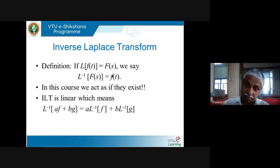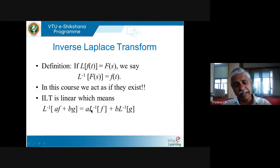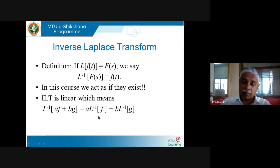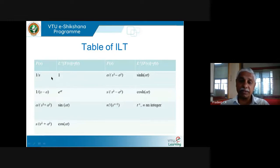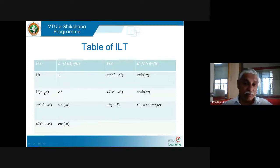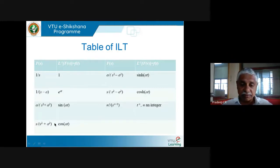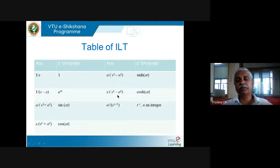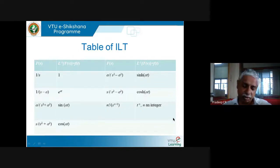An important property: inverse Laplace transform is also a linear transformation, meaning L⁻¹{aF + bG} = a·L⁻¹{F} + b·L⁻¹{G}. We also have a table: inverse Laplace of 1/s is 1; of 1/(s-a) is e^(at); of a/(s²+a²) is sin(at); of s/(s²-a²) is cosh(at); and of n!/(s^(n+1)) is t^n. These are the standard inverse Laplace pairs.